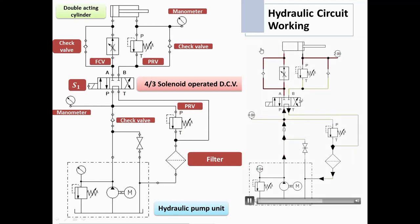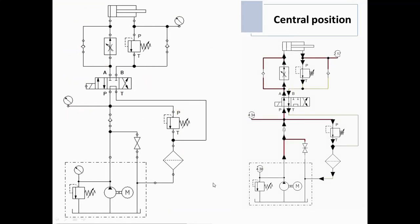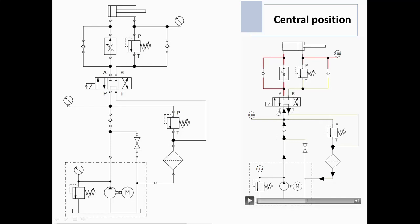Now the animation of the given circuit is shown. First we will start with the central position — how the circuit works in the central position. In the central position, the pump will pump the fluid from the reservoir. The check valve is open and it will enter the pump port P. From port P it will go to port T, then into the return side filter, and back to the reservoir. So in the central position, nothing actuates.